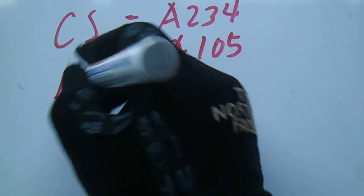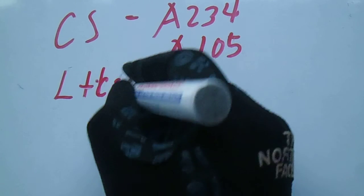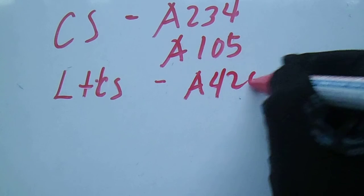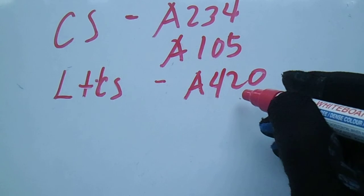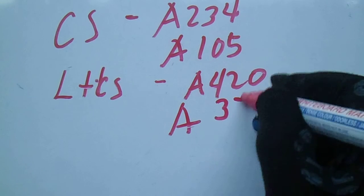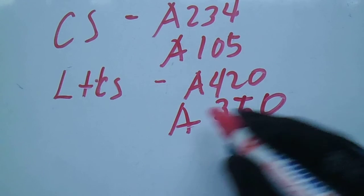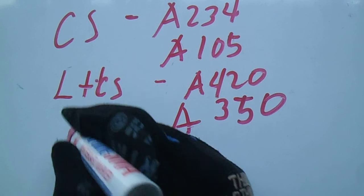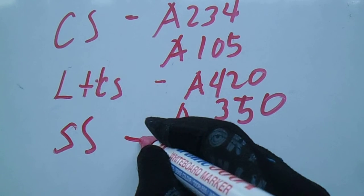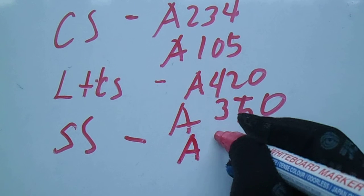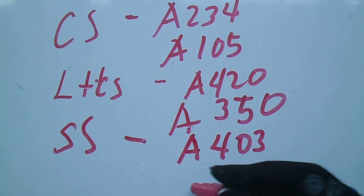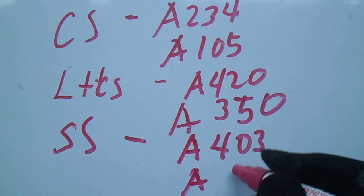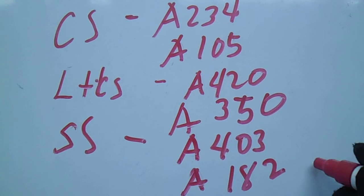For LTCS fittings, the ASTM codes are A420 and A350 — these are for low-temperature carbon steel. For Stainless Steel fittings, the ASTM code is A403 type 304 and A182 type 316.